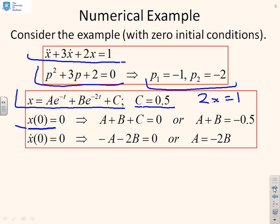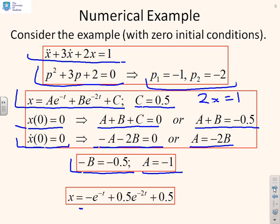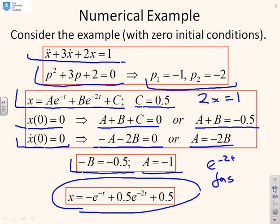Next, I use my first initial condition, x(0) equals 0, and that gives me A plus B plus C equals 0, or A plus B equals minus 0.5. I use my initial condition ẋ(0) equals 0, and that gives me minus A minus 2B equals 0, or A equals minus 2B. Solving those two linear simultaneous equations, I get B equals minus 1/2, A equals minus 1. Therefore, my ultimate solution is x equals minus e^(-t) plus 0.5 e^(-2t) plus 0.5. What do you notice? e^(-2t) is faster than e^(-t), and therefore, as expected, it has a smaller coefficient. The coefficient is 0.5, whereas the coefficient of e^(-t) is minus 1.